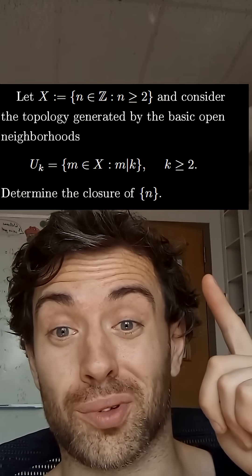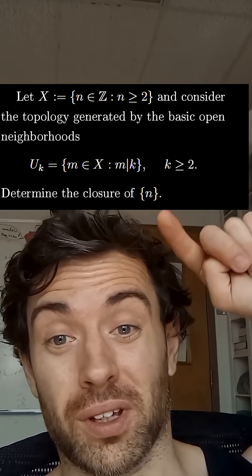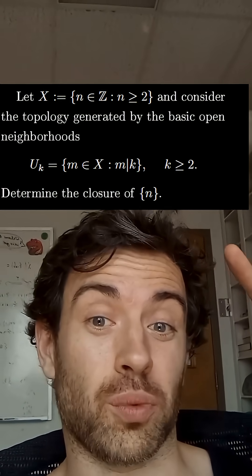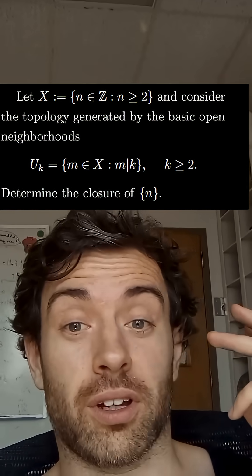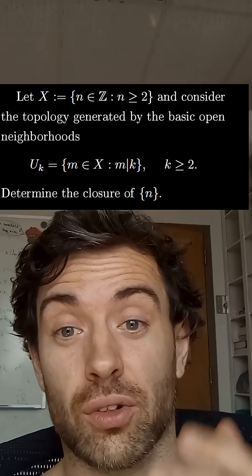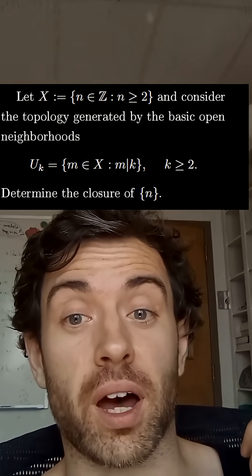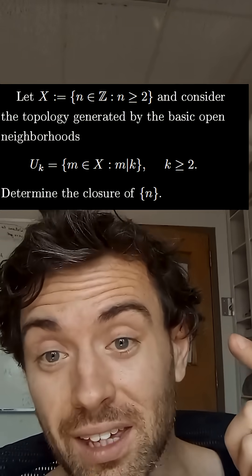Here's a GRE question that a student was asking me about. So we consider the set X of integers which are at least two and we're going to consider the topology on that set whose basic open sets are given by for each K at least two,